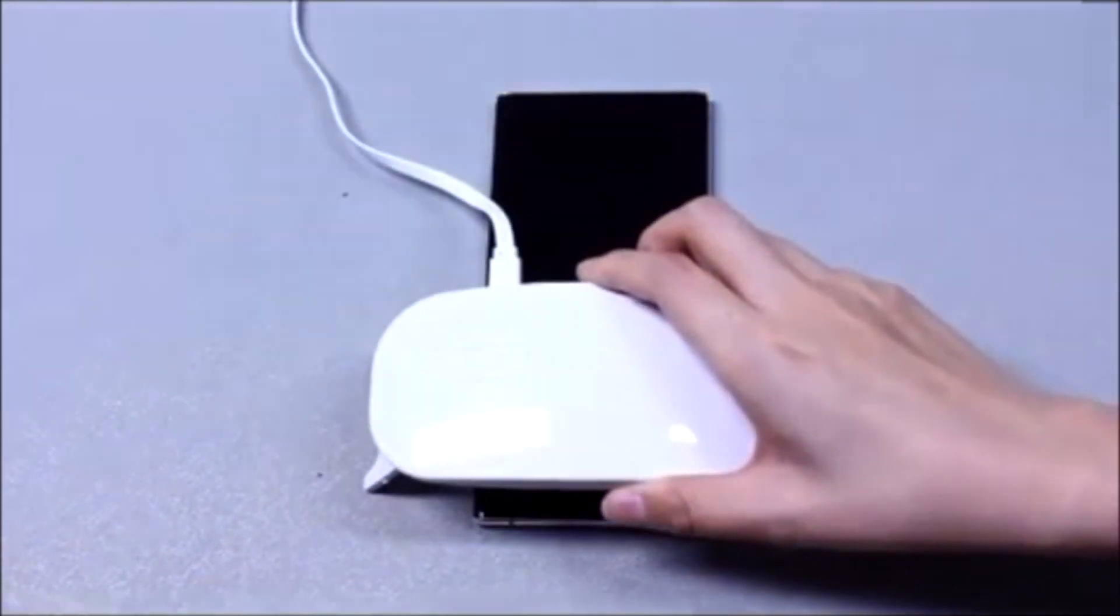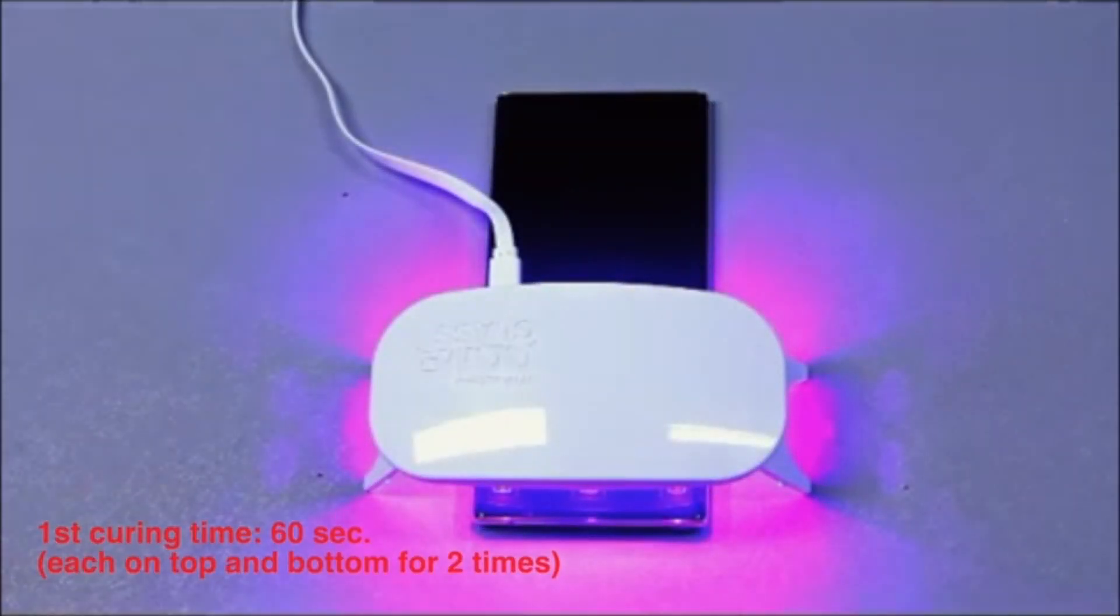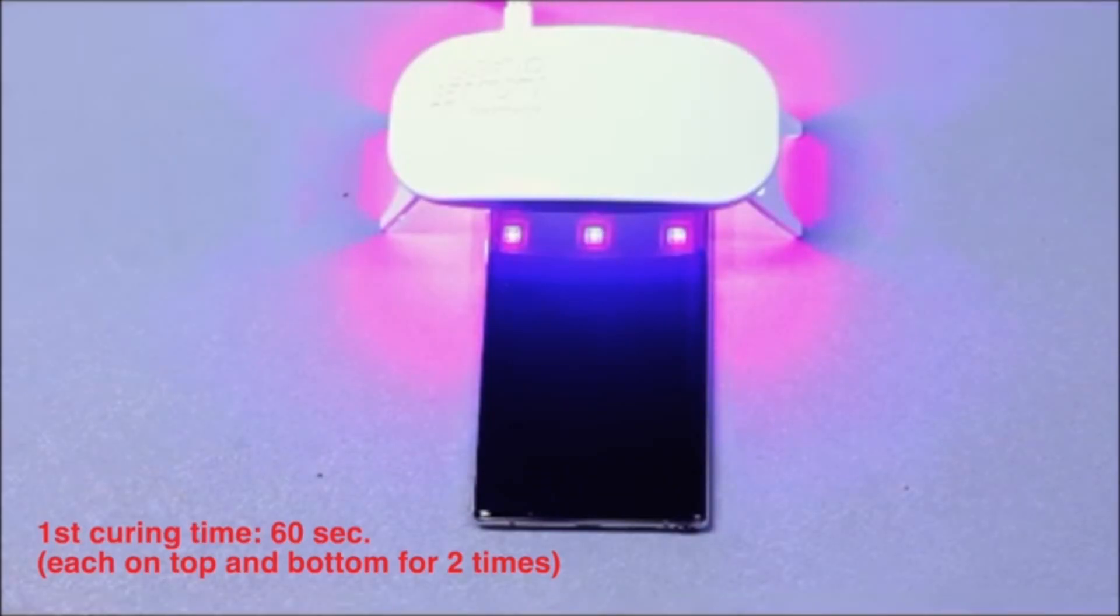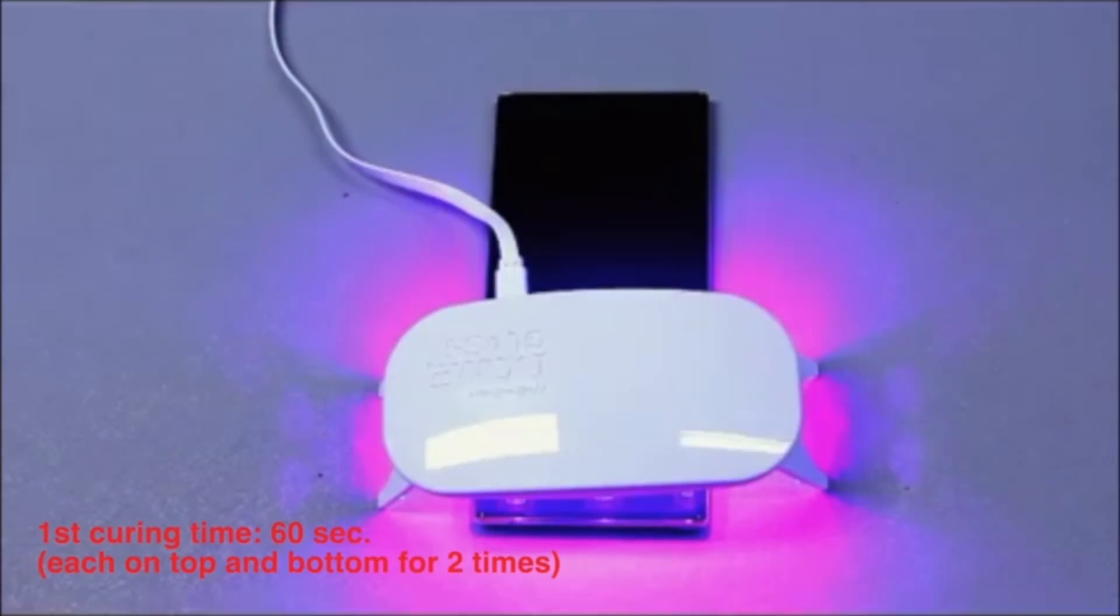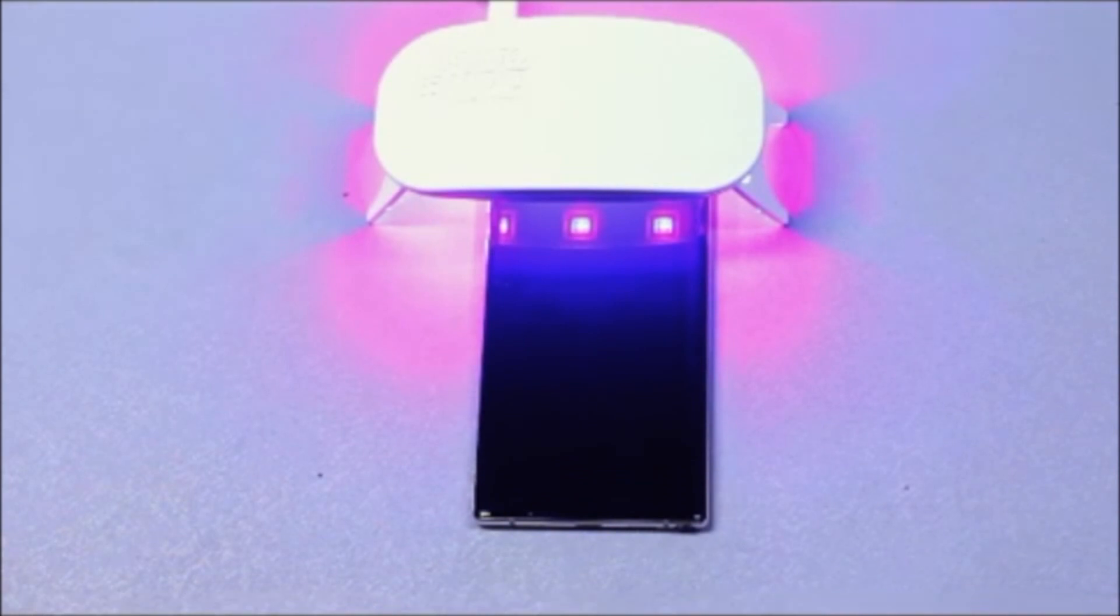For stage 2, we will finish the curing process by placing the UV light again at the bottom part for one minute and then at the top for another minute. Repeat this process and cure one more time, one minute at the bottom and then one final minute at the top.